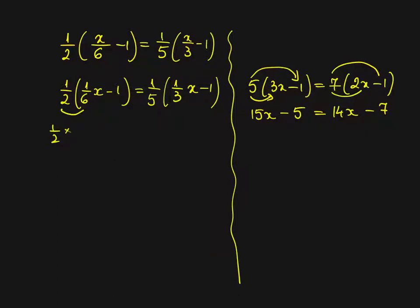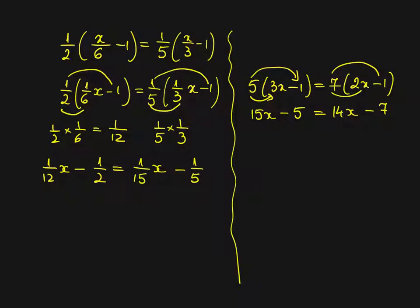1 over 2 times 1 over 6 will give me 1 over 12. You can do it with a calculator. So we have 1 over 12x minus 1 over 2 equals 1 over 5 times 1 over 3x minus 1 over 5 times 1 is 1 over 5. And now we move to the right hand side equation.